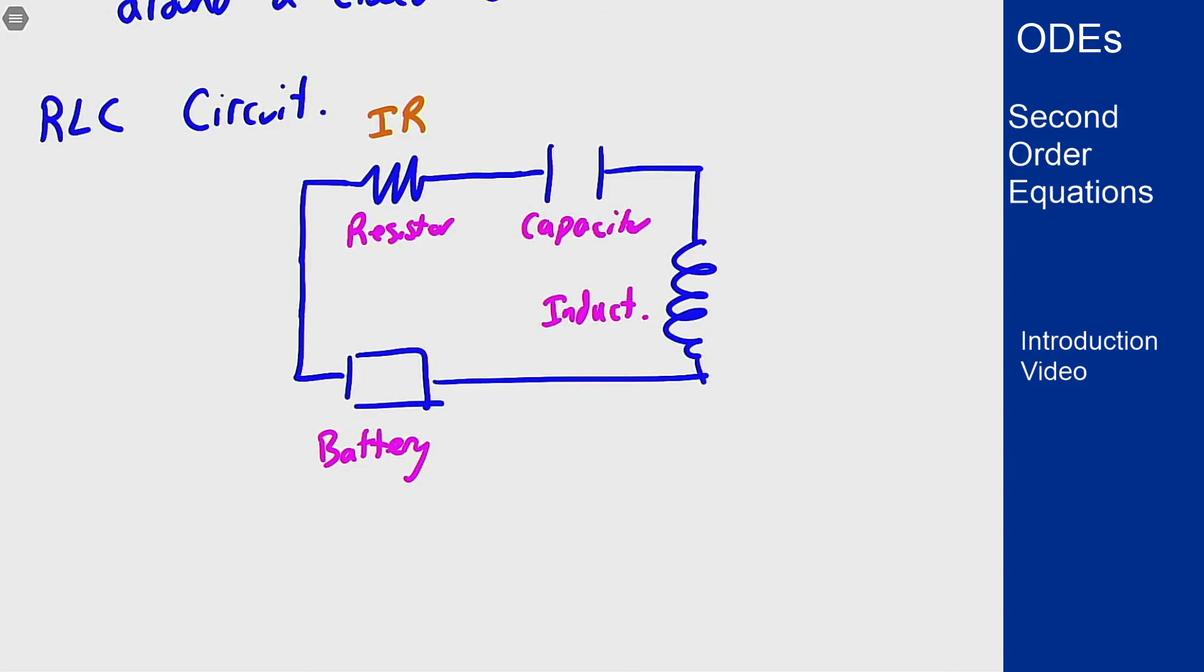We know for a resistor, the voltage drop equals the current times R, which is the resistance of that resistor. Across the capacitor, the voltage drop is q over C, where q is the charge that's in that circuit at that point and C is the capacitance of that capacitor, that's a fixed constant. And for an inductor, the voltage drop is L, inductance of that inductor, times the change in current with respect to time.